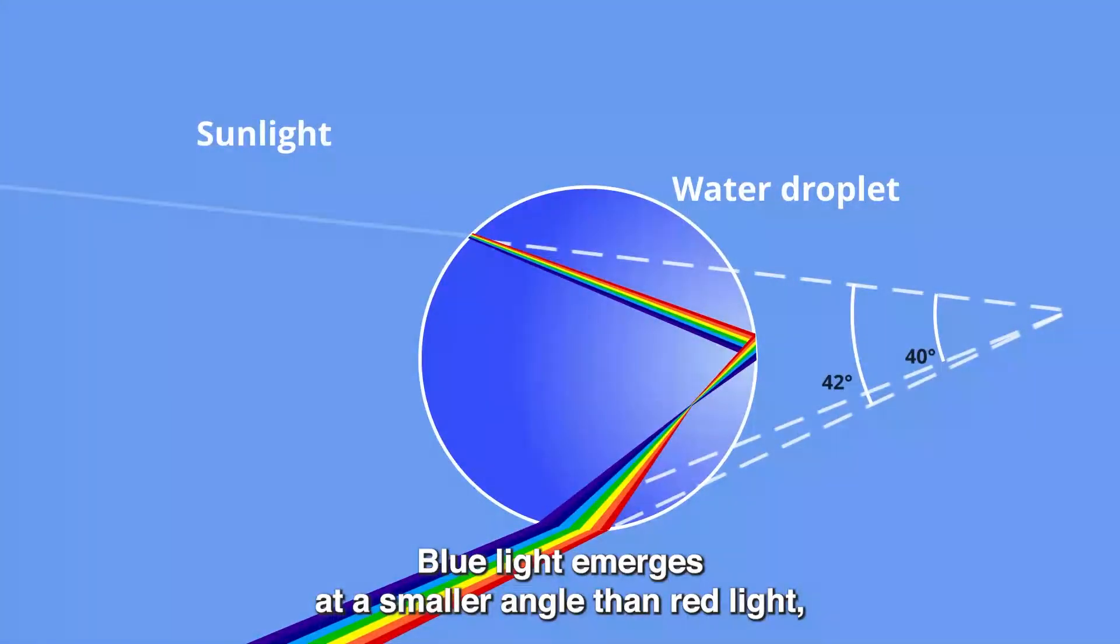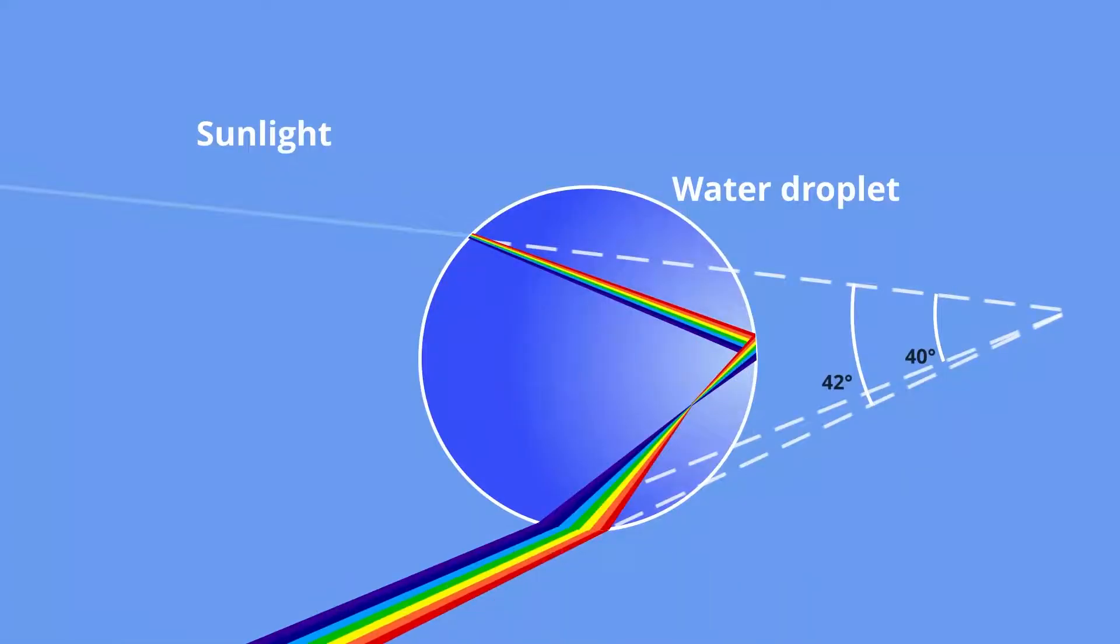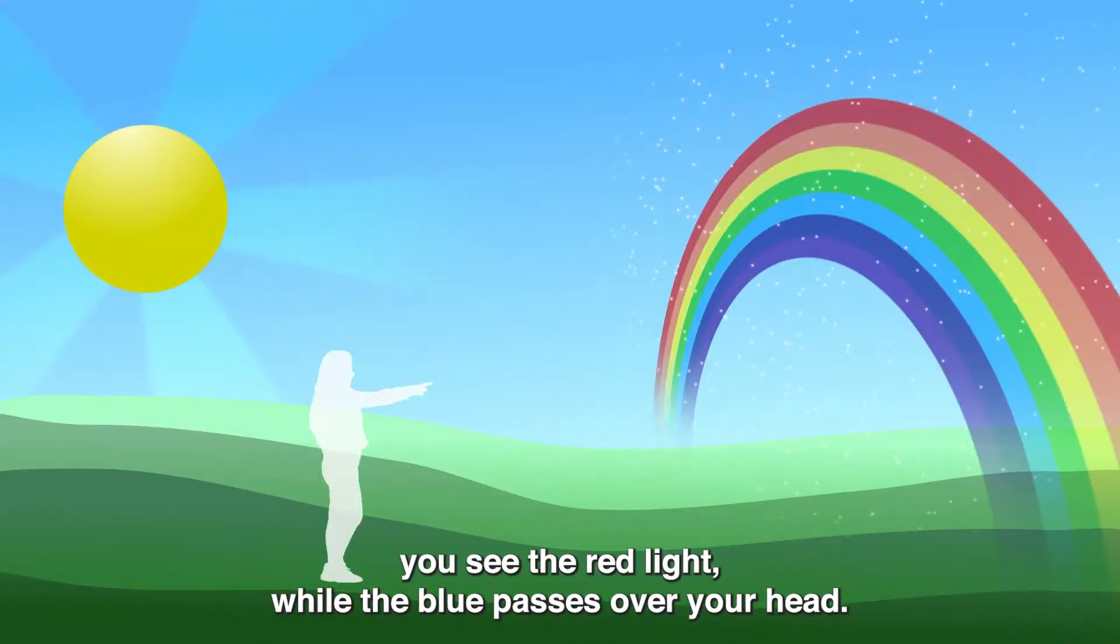Blue light emerges at a smaller angle than red light, so if you look up at a steep angle you see the red light while the blue passes over your head.